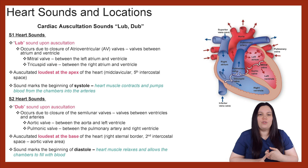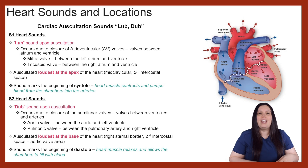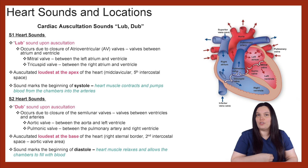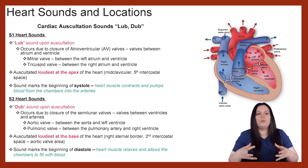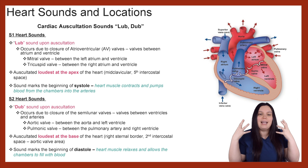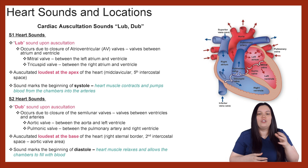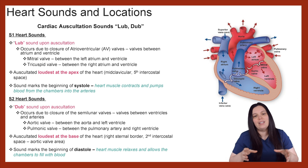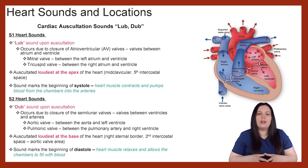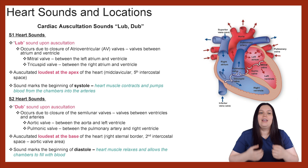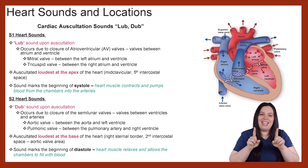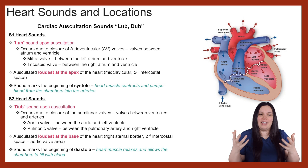We have two AV valves: our mitral valve, located on the left side of the heart between the left atrium and left ventricle, and our tricuspid valve, on the right side between the right atrium and right ventricle. S1 is heard loudest at the apex of the heart — the mid-clavicular fifth intercostal space — and it marks the beginning of systole, when the heart contracts and pumps blood into the aorta and lungs.